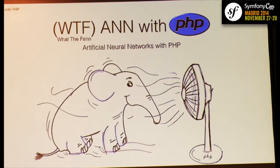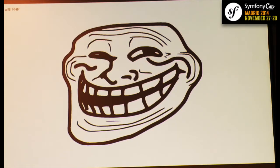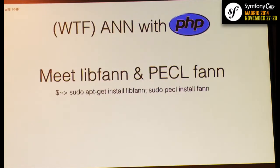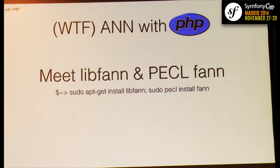So — artificial neural networks with PHP? Yes! It's amazingly easy. Please meet libfann and PHP-fann. Libfann is a C library for fast artificial neural networks, commonly used in academic circles. The installation is really easy: just run 'apt-get install libfann', then 'pecl install fann', and you're done — you now have a neural network.